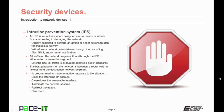An IPS is an active system designed to stop a breach or attack from succeeding in damaging the network. They're usually designed to perform an action or set of actions to stop the malicious activity, and will also inform a network administrator through log files, SMS text messaging, and/or email notification. For an IPS to work, all traffic on the network segment needs to flow through the IPS as it enters and leaves the network segment. Like the IDS, all traffic is evaluated against the same set of standards.